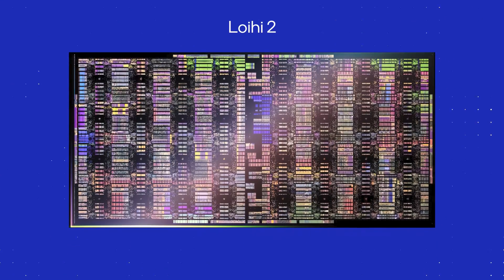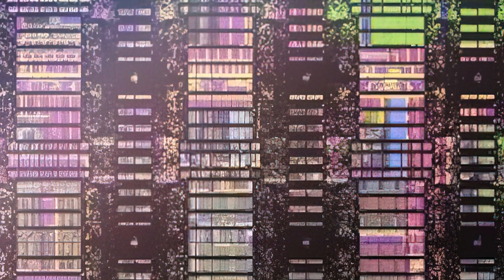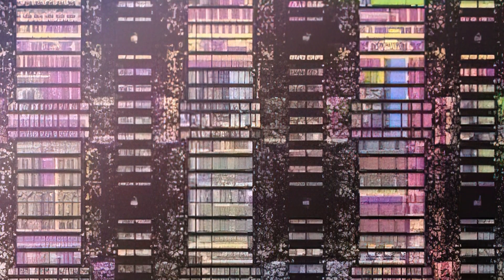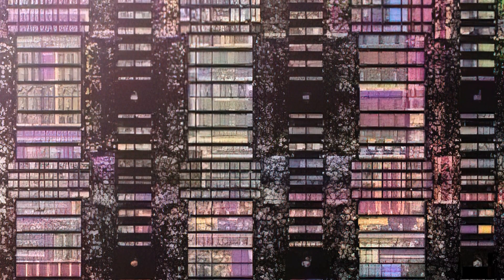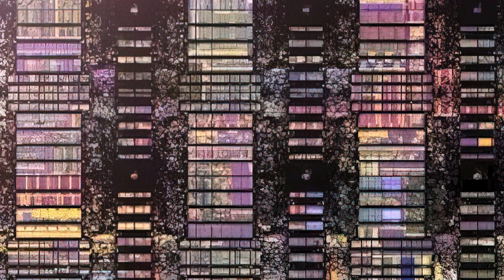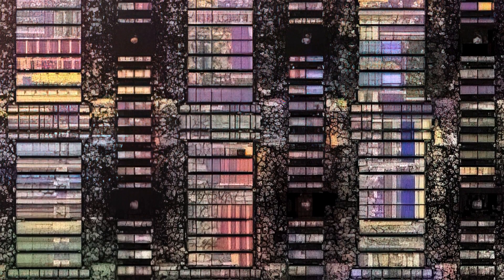Moving on to a real neuromorphic chip, here we have Loihi2, developed by my group and one of the most recently developed neuromorphic chips. The chip plot, frankly, looks rather boring because, like a memory chip, it's mostly a single repeated core instantiated in a mesh, and the core is itself dominated by internal memory structures. Loihi2 is a fully digital chip implemented in a standard CMOS process.